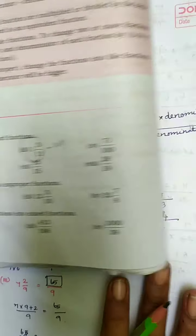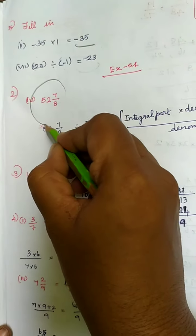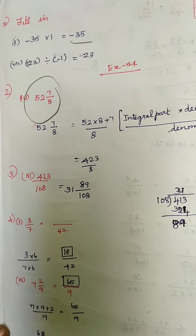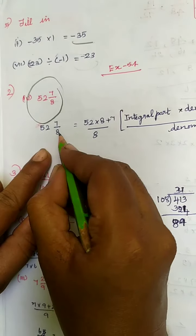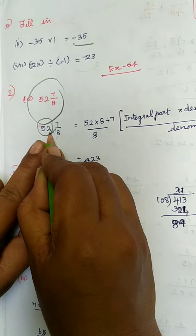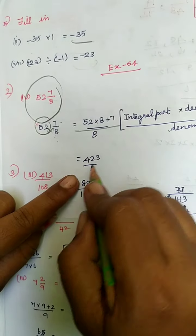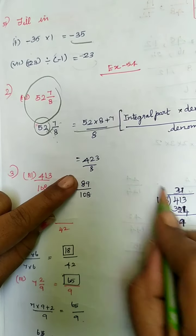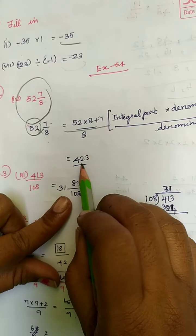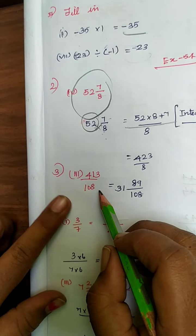Problem number 2: write the following mixed fraction as an improper fraction. You will multiply the denominator into the integral part: 52 into 8 plus 7 divided by 8. When you multiply 52 into 8 it is 416, then 416 plus 7 is 423, so 423 divided by 8.